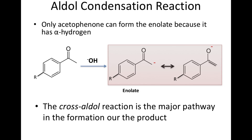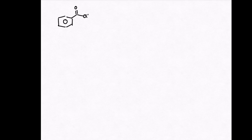The enolate is formed from the reaction between the base and the alpha-hydrogen. The first step of the aldol condensation reaction is the formation of the enolate. Let's review the general mechanism of the aldol condensation reaction in the synthesis of a chalcone.